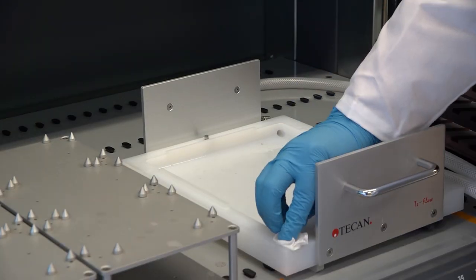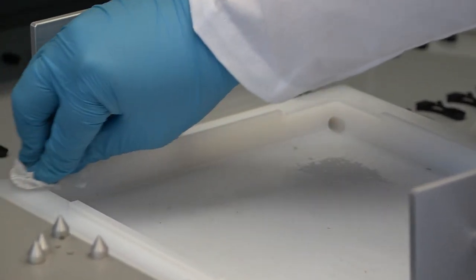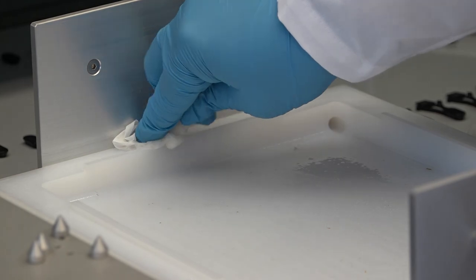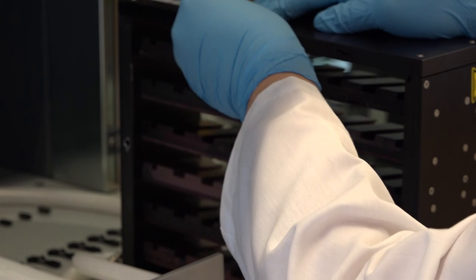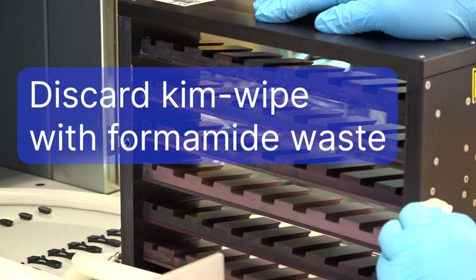Using KimWipes dampened with lab-grade water, clean all surfaces between the heat exchanger and the reagent pan to remove any reagent buildup. Discard KimWipes as formamide waste.